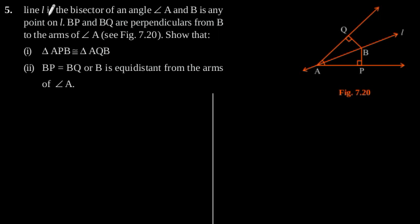Exercise 7.1, Question number 5. Line L is the bisector of an angle A and B is any point on L. BP and BQ are perpendiculars from B to the arms of angle A.